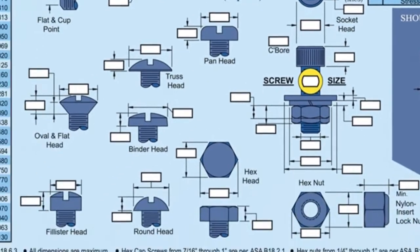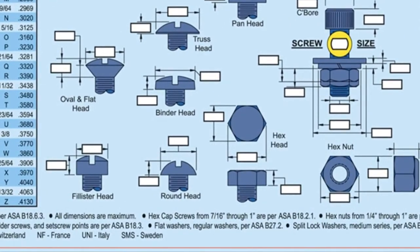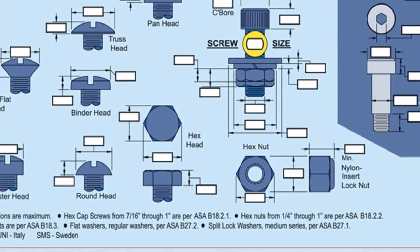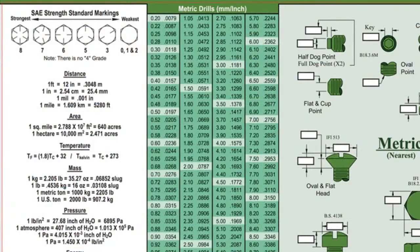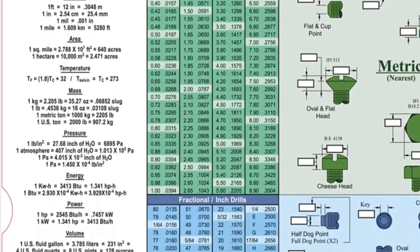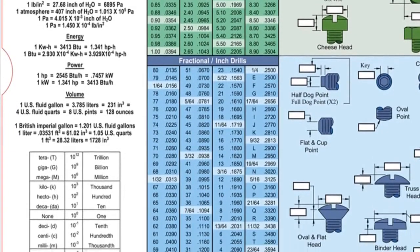Standards for the fasteners are at the bottom of the chart or next to the fastener itself. Illustrations of head markings for different bolt grades, helpful unit conversions, and prefixes for numbers are displayed vertically in the left side column.